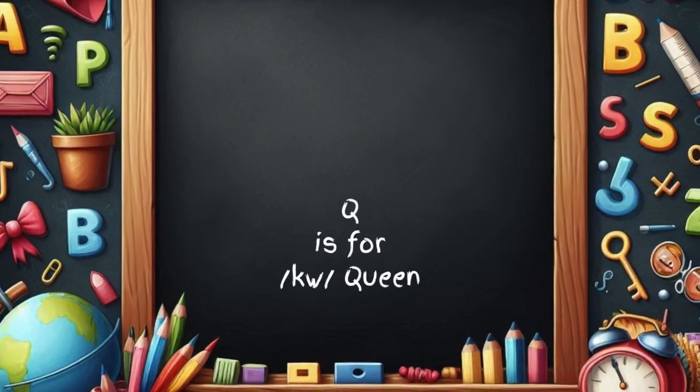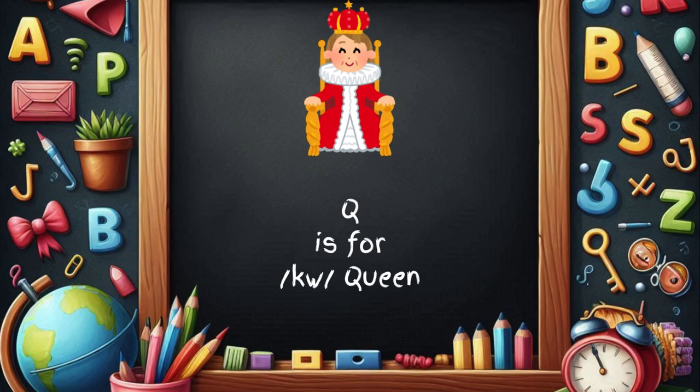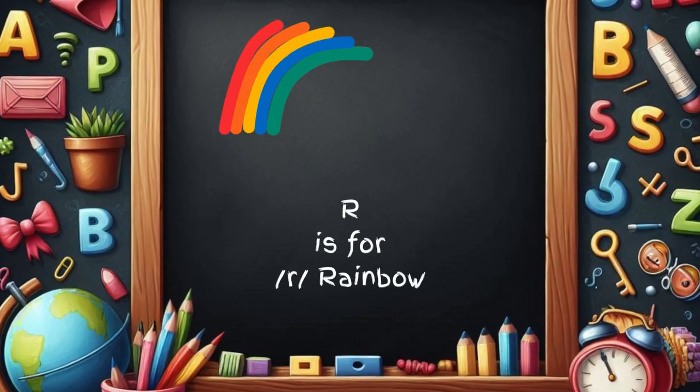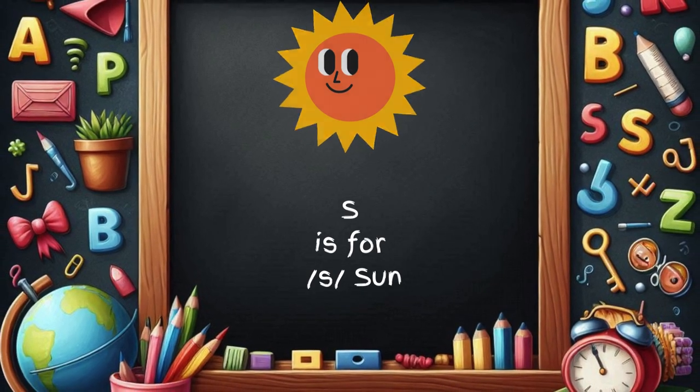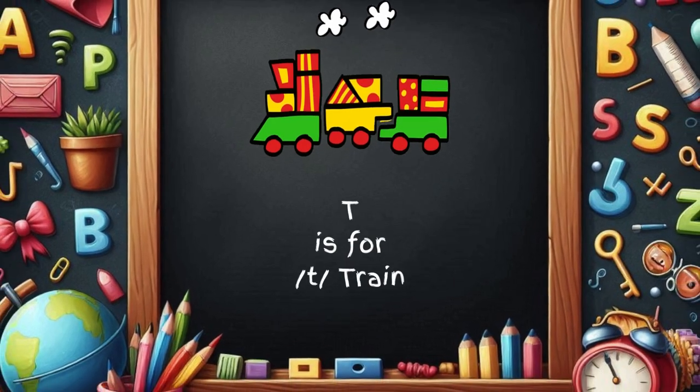Q is for queen, q-q-queen. R is for rainbow, r-r-rainbow. S is for sun, s-s-sun. T is for train, t-t-train.